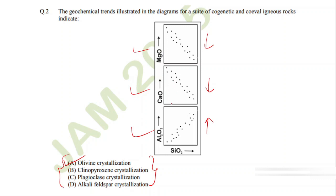Second is clinopyroxene crystallization. I just told you that this calcium oxide decreasing trend is absolutely because of pyroxene crystallization. It is not because of any feldspar, because alumina is not showing a decreasing trend along with calcium oxide.